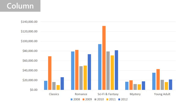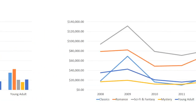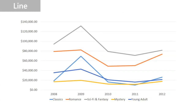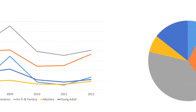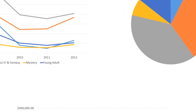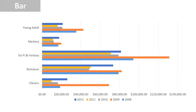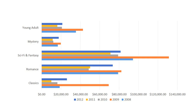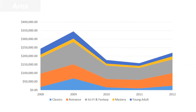Column charts are good all-around charts — they work with many different types of data. Line charts are best for showing trends over time. Pie charts are unique because they let you see your data in proportion instead of on a graph. We also have the bar chart, which is basically just a column chart turned on its side. And finally, area charts, which are similar to line charts, except the areas under the lines are filled in.